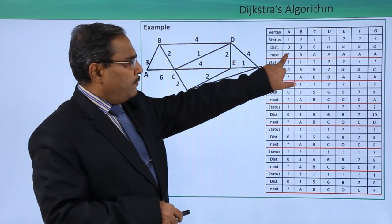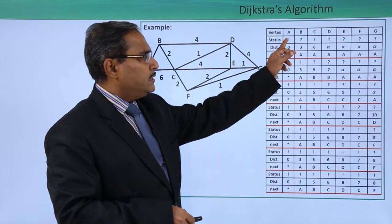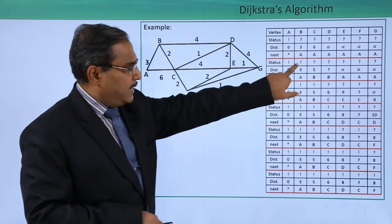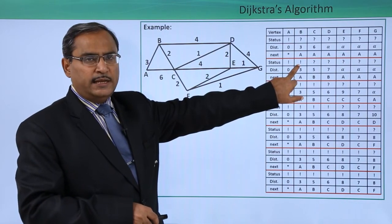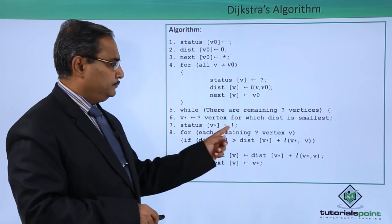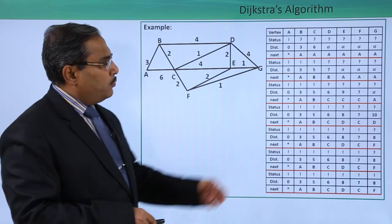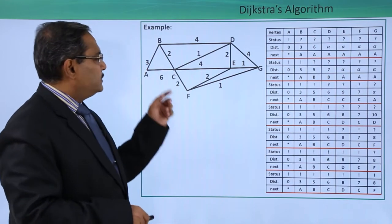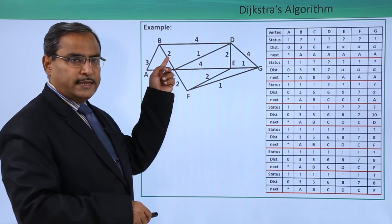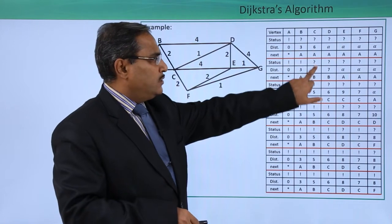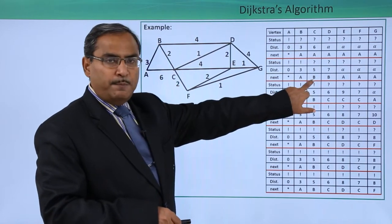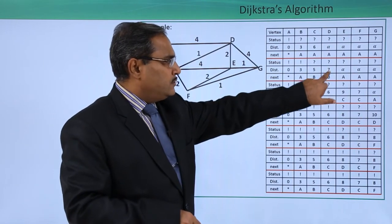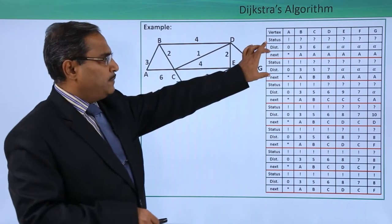Looking at the '?' vertices with distances 3, 6, and infinity, the minimum is 3, which is vertex B. So B becomes v* and its status is changed to '!'. Now from B: B to C has distance 2, so 3 + 2 = 5, which is less than 6, so we update dist[C] = 5 measured from B. B to D has distance 4, so 3 + 4 = 7, which is less than infinity, so we write 7 measured from B.